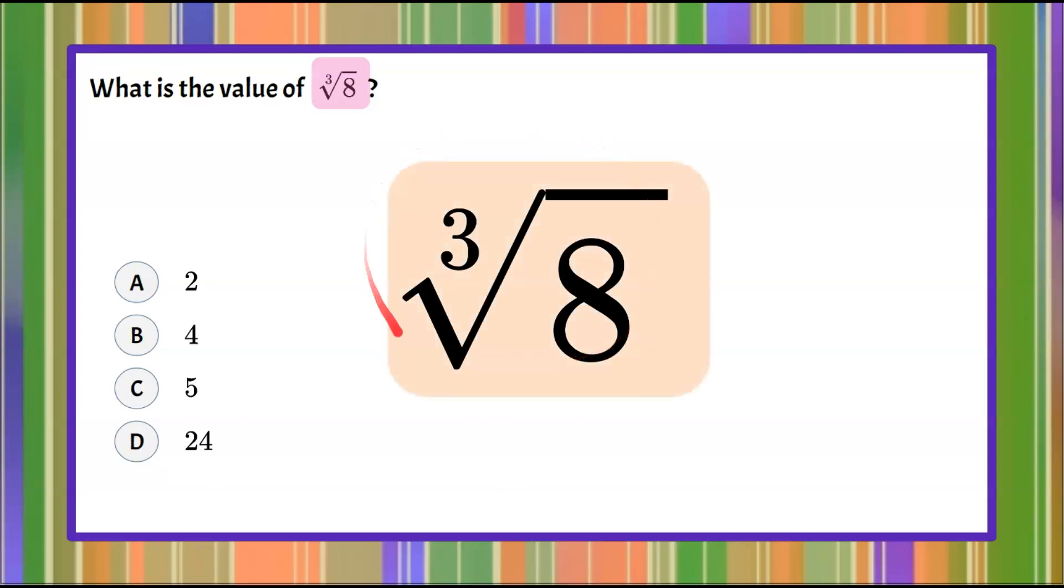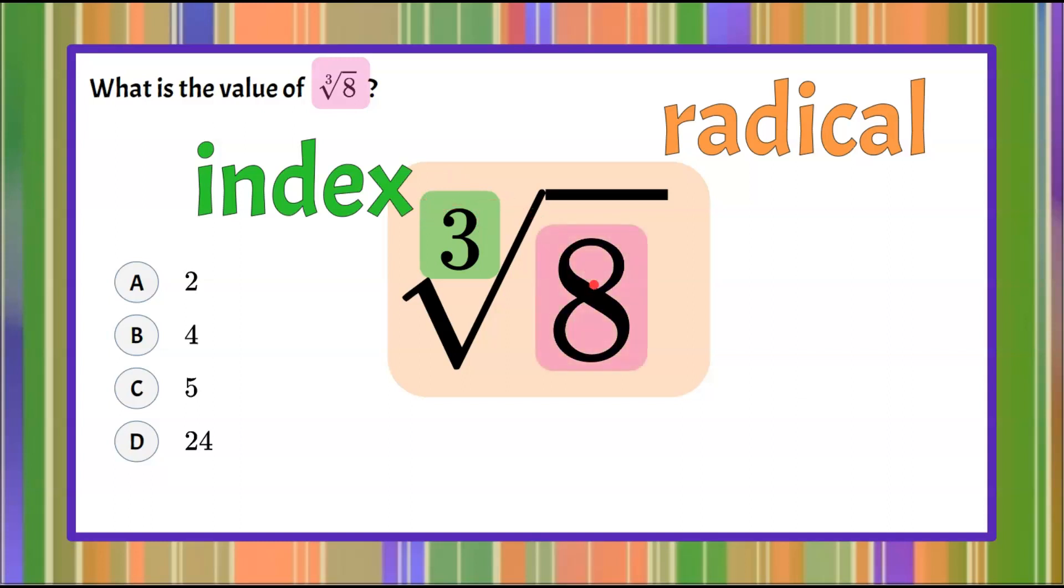As an entire whole, this expression is what we call a radical. So it has this radical symbol but it's a radical. Now we look at this and it's in this indent. We call that an index. That actually tells us what to do to what is inside and that is what we call the radicand. So the cube root of 8 is a radical with an index of 3 and a radicand of 8.